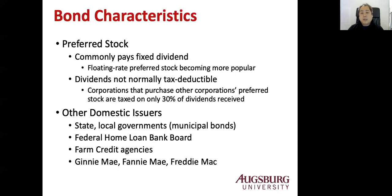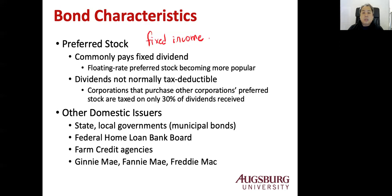What is preferred stock? Preferred stock is not a bond — it's actually stock. But the cash flow looks like bonds because preferred stock pays fixed dividends, so it's usually characterized as a fixed income security. Preferred stock commonly pays fixed dividends; sometimes floating rate preferred stock is linked to the inflation rate. Dividends are not tax deductible since this is a dividend, not interest. However, corporations that purchase other corporations' preferred stock are taxed on only about 30% of dividends — so 70% of the dividends are tax deductible — because the IRS avoids double taxation.